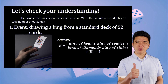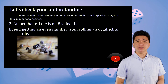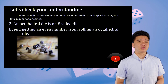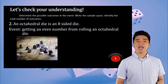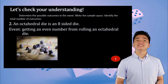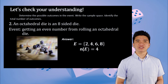Number 2: An octahedral die is an eight-sided die. Determine the possible outcomes in the event of getting an even number from rolling an octahedral die, then write the sample space and the total number of outcomes. The sample space is E = {2, 4, 6, 8}. The total number of outcomes is N(E) = 4.